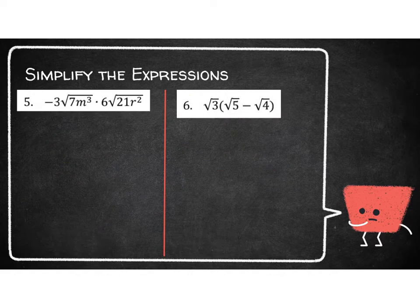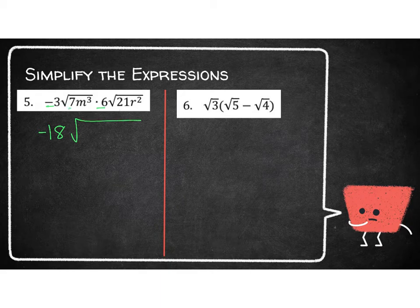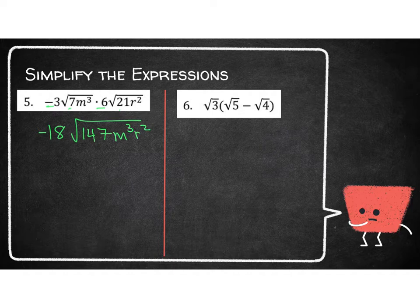Let's take a look at number 5. I have negative 3 times the square root of 7m to the 3rd times 6 times the square root of 21r squared. So negative 3 times 6 goes together on the outside. And yes, you can have negatives outside the radical — you just can't have negatives underneath the radical. So negative 18, and then I have 7 times 21, which gives me 147. I still have m to the 3rd and r squared.